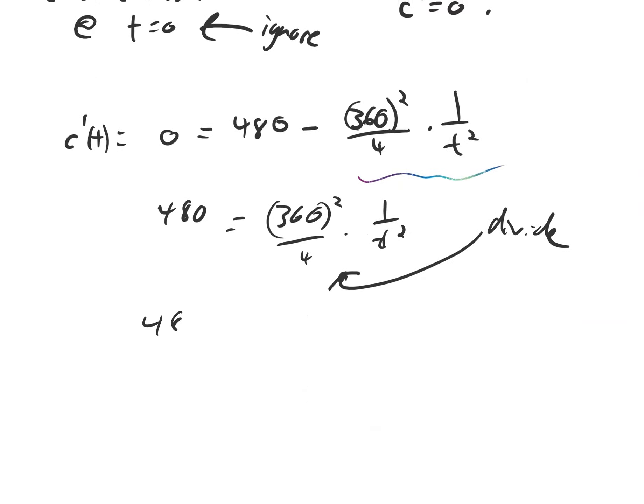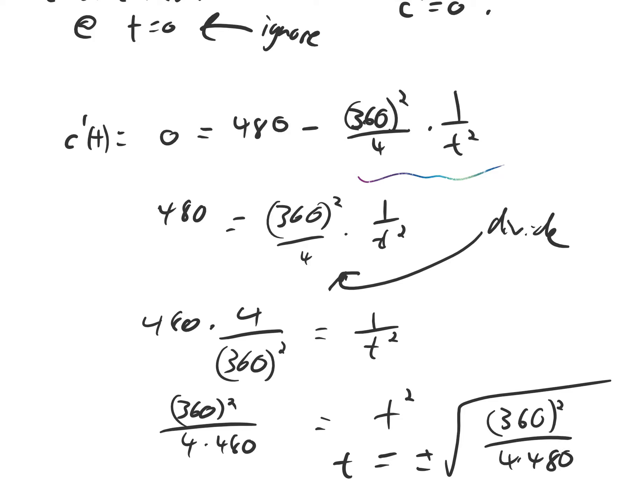Then we'll divide both sides by this constant. So we'll get 480 times 4 over 360 squared equals 1 over t squared. Then take the reciprocal on both sides. t squared equals 360 squared over 4 times 480 in the denominator. And then finally take the square root on both sides. So plus or minus the square root of this whole crazy thing.